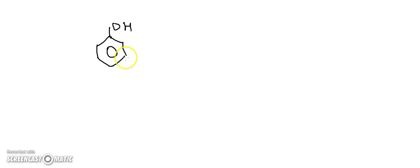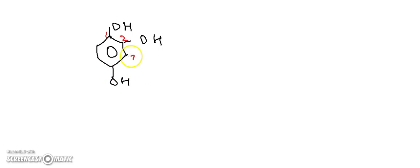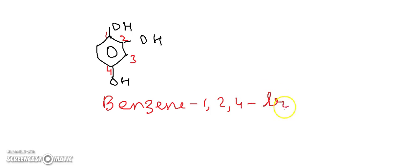For another example, if you have a phenol compound with an OH group here and another OH group present at a different position, the positions are 1, 2, and 4, so the name of this compound is benzene-1,2,4-triol. Today we have learned about the nomenclature of phenol. To learn more chemistry topics, please like, share, and subscribe to Chemistry Class. Thank you.